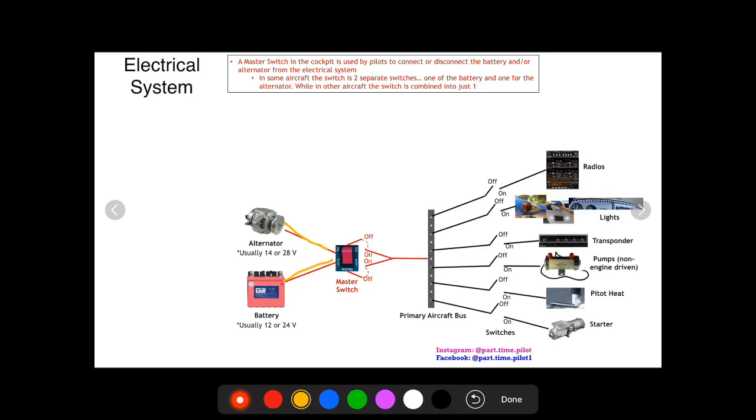And then some of them are split so that you can turn just the alternator or just the battery on and off. And basically this connects the alternator and battery to the primary aircraft bus.